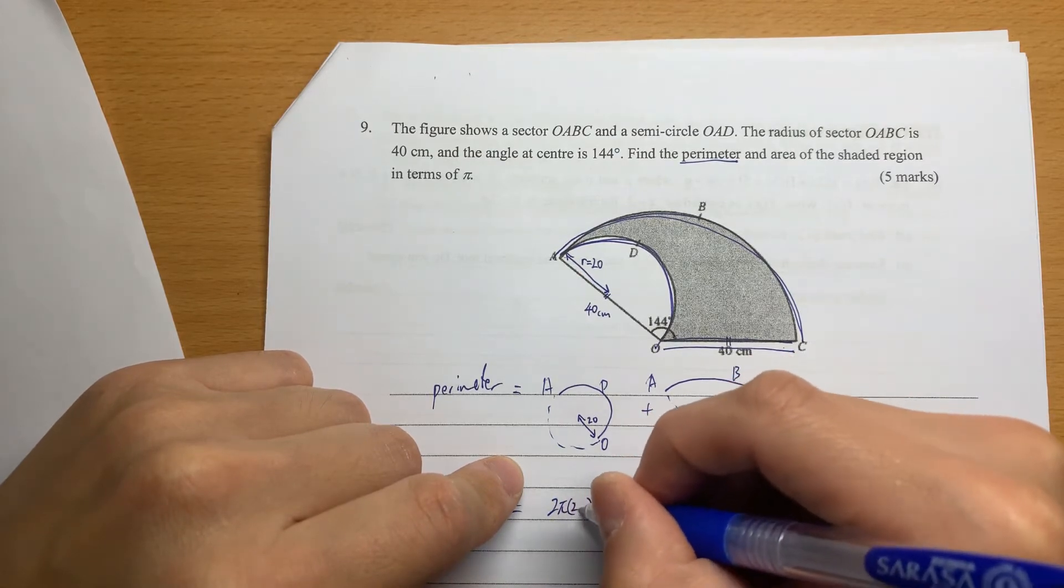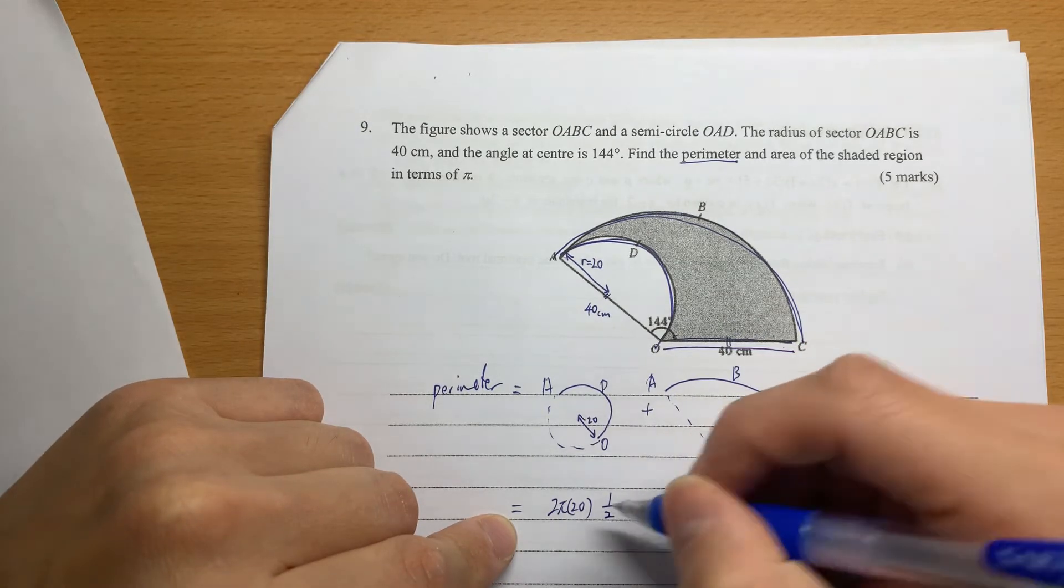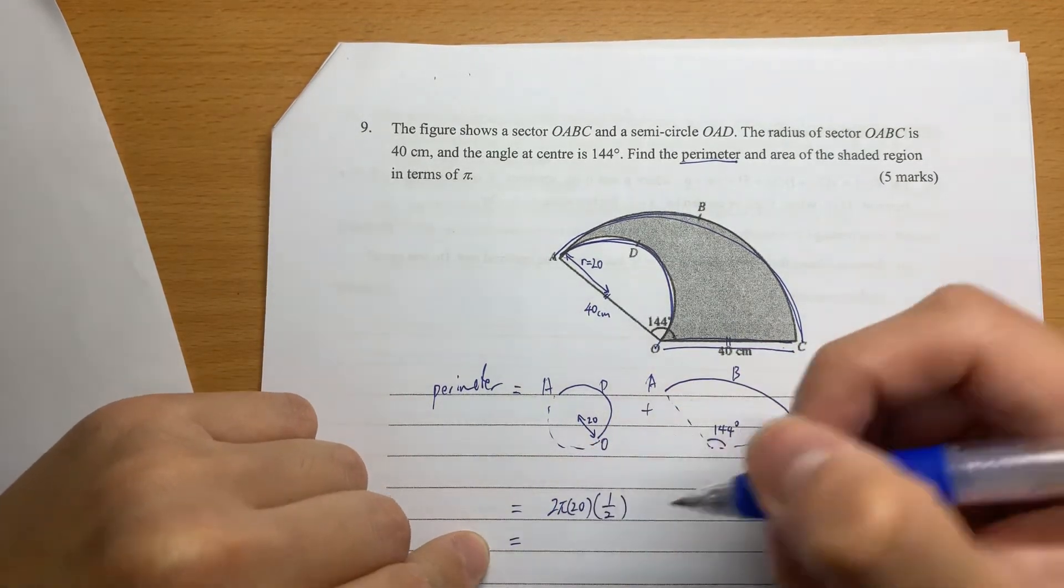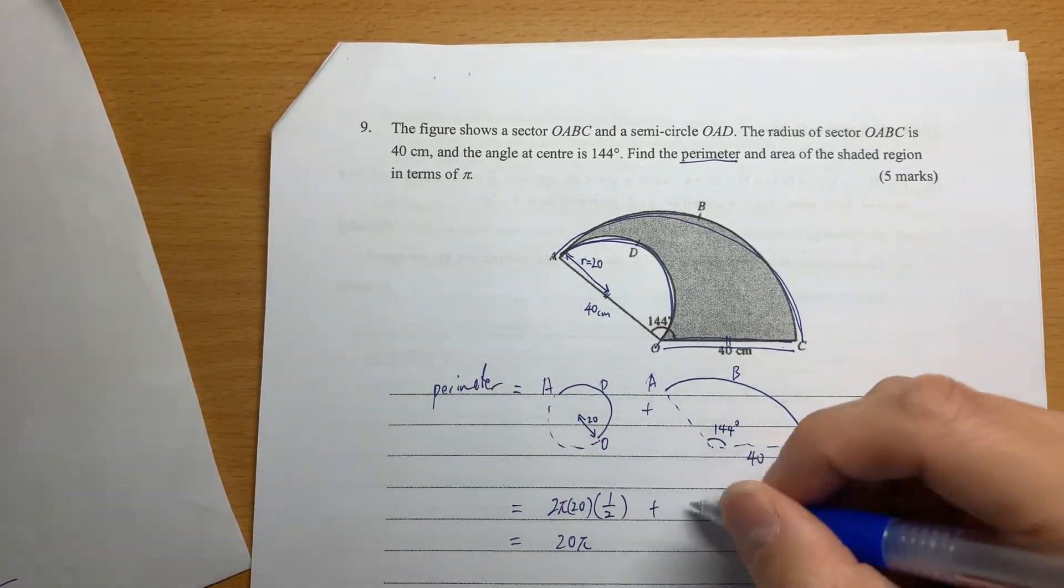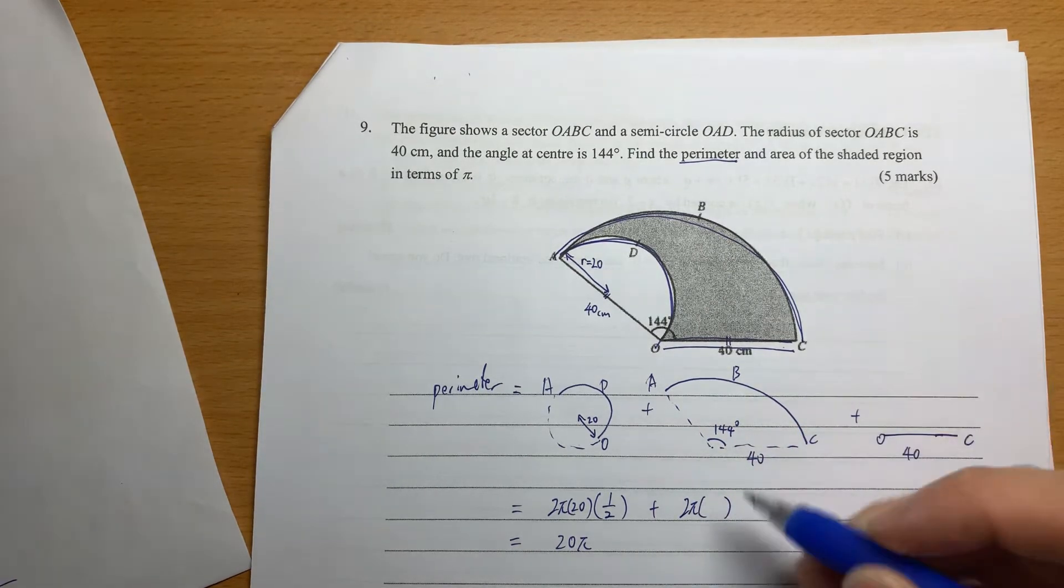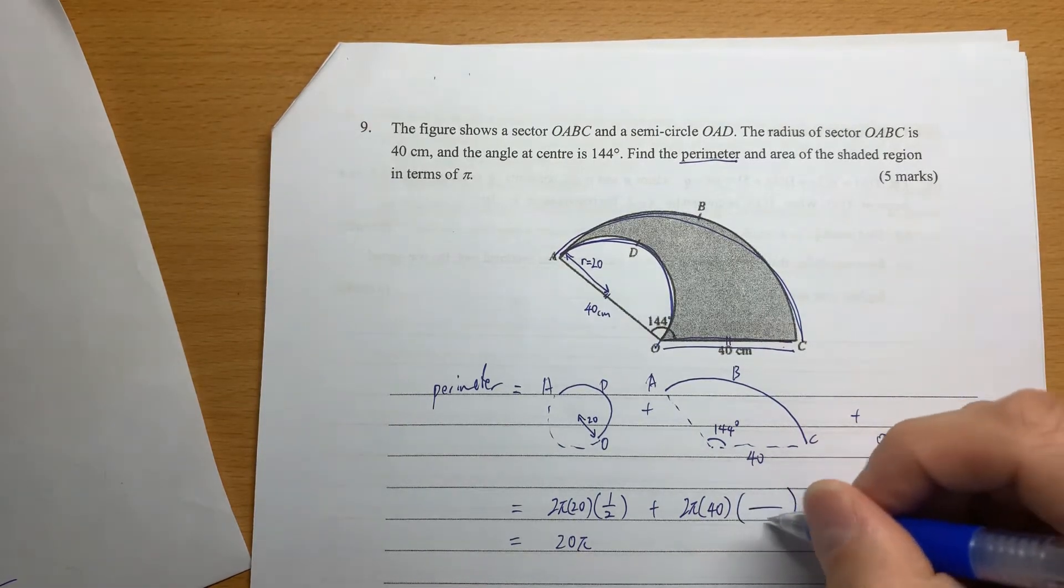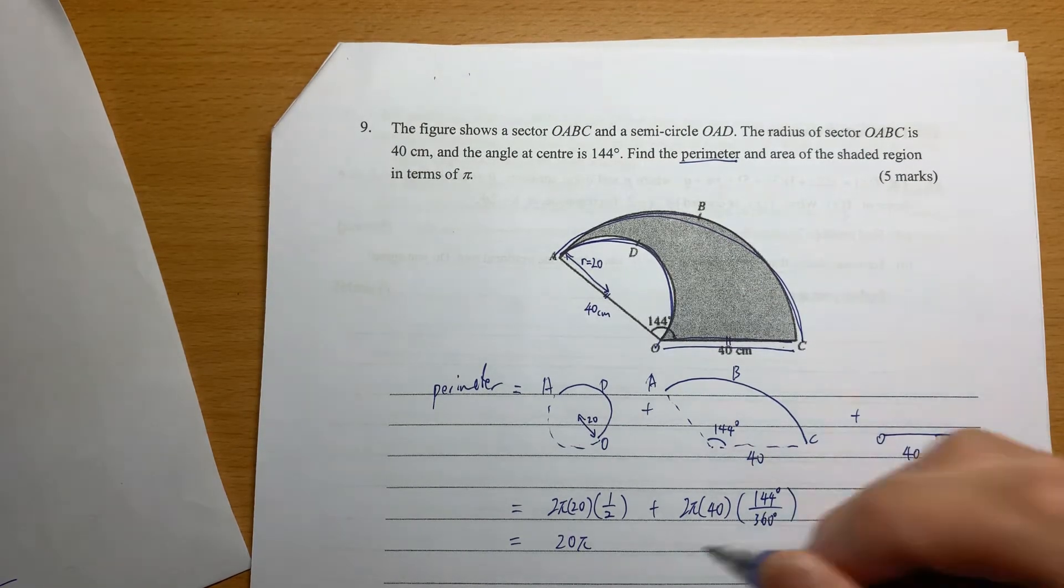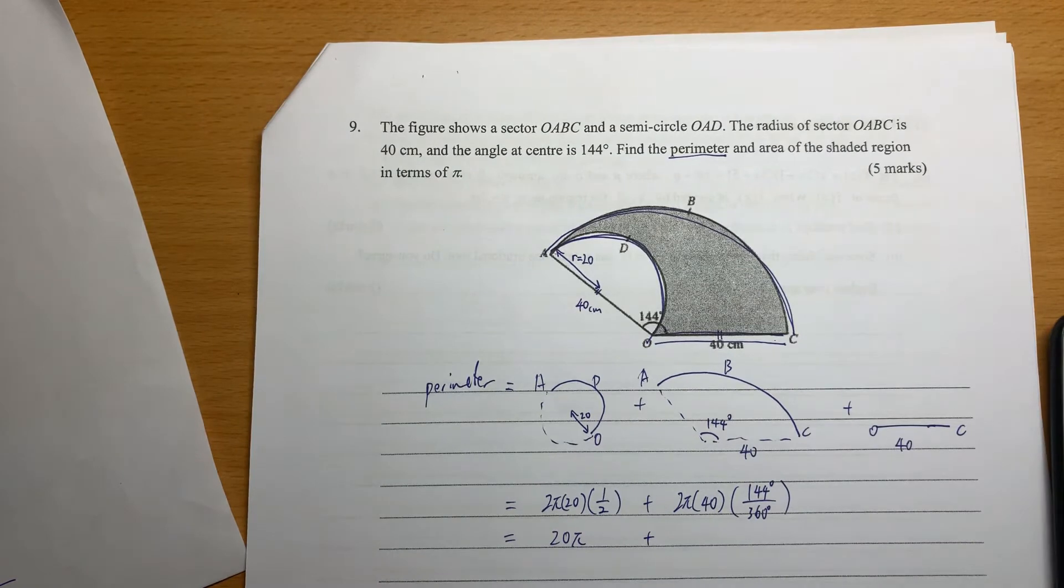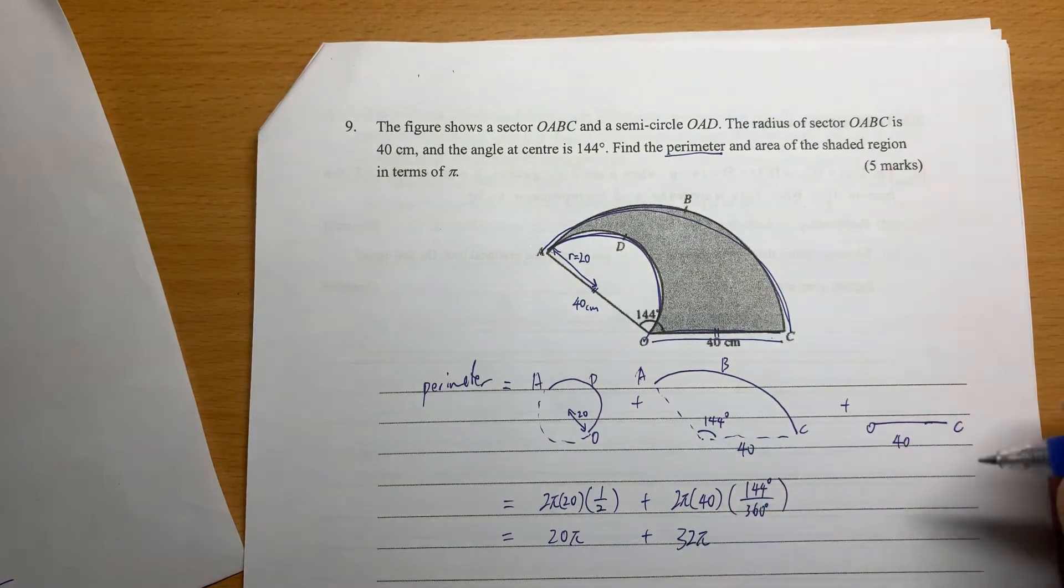So we are going to calculate this one by one. It is 2πr. The r here is 20, and then it's just half of a circle, so 1/2. We got 20π. We simplify the first part. The second part, this is 2πr. The radius here is 40 instead of 20, and then we got 360 pieces. We just got 144 out of it. So use your calculator, and then this is 144/360 times 80. We got 32π.